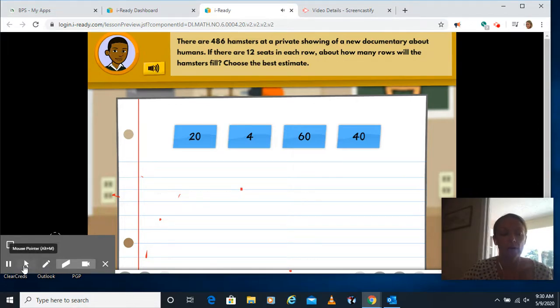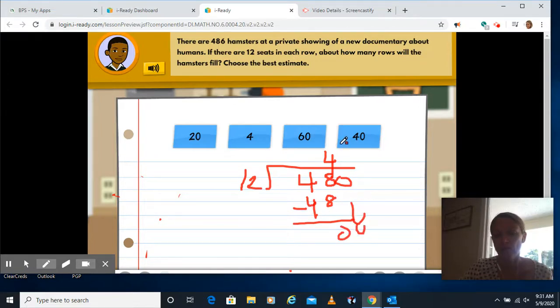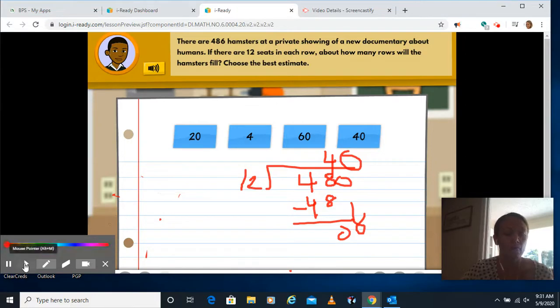All right. This is another one where I kind of see compatible numbers, right? 12. I know a multiple of 12 is 48. So for 486, I'm going to round it to 480 because I know a multiple of 12 is 48. I know 12 goes into 48 four times. And then I would have my zeros. So our best estimate would be 40.